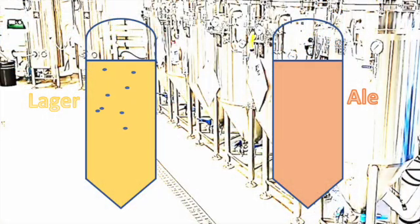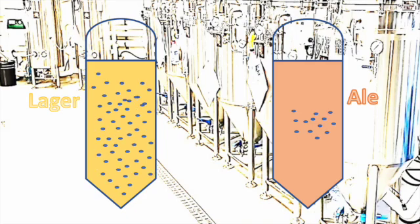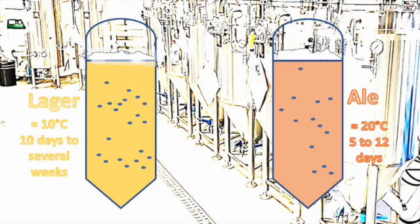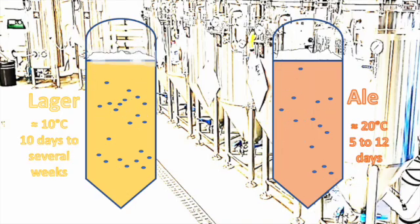Wort can be pitched with one of many lager or ale yeast strains. At the start of the beer fermentation, the yeast cells begin to reproduce and multiply by budding. During the fermentation, the number of yeast cells increases between 3 to 6 times. Throughout fermentation, the yeast metabolizes fermentable sugars into alcohol and carbon dioxide and many different flavor compounds.